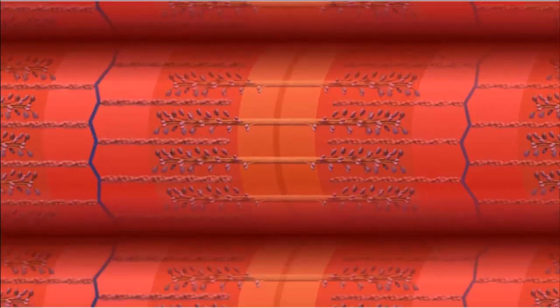The thick filaments are myosin, which are anchored at the center of the sarcomere, called the M-line.